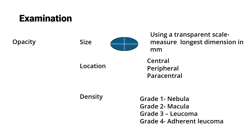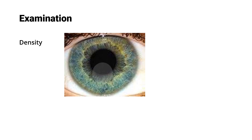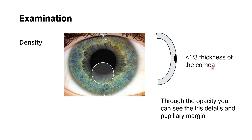Also describe the density — whether it is a nebula, macula, leucoma, or adherent leucoma grade. These are the four grades of corneal opacity: Grade 1 is nebula, Grade 2 is macula, Grade 3 is leucoma, and Grade 4 is adherent leucoma. For nebular grade, the opacity involves only one-third of the anterior cornea, and on examination you can see through the opacity and make out the iris details and pupillary margin.